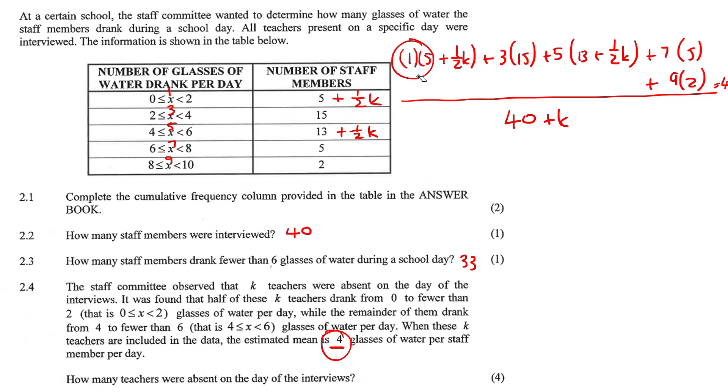That's just going to give us 5 plus half K. This is just going to give us 45, 65. I'm just multiplying this in. Plus 2.5 K because 5 times a half is 2.5. Plus 35 plus 18 over 40 plus K. And all of that should be equal to 4.